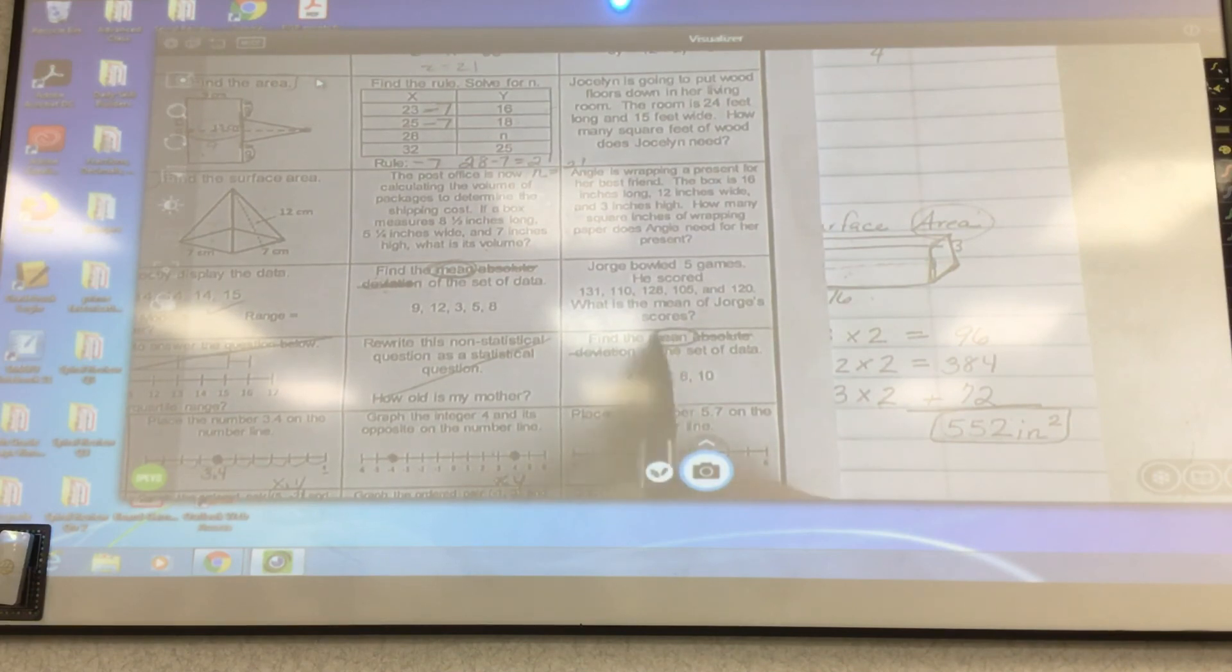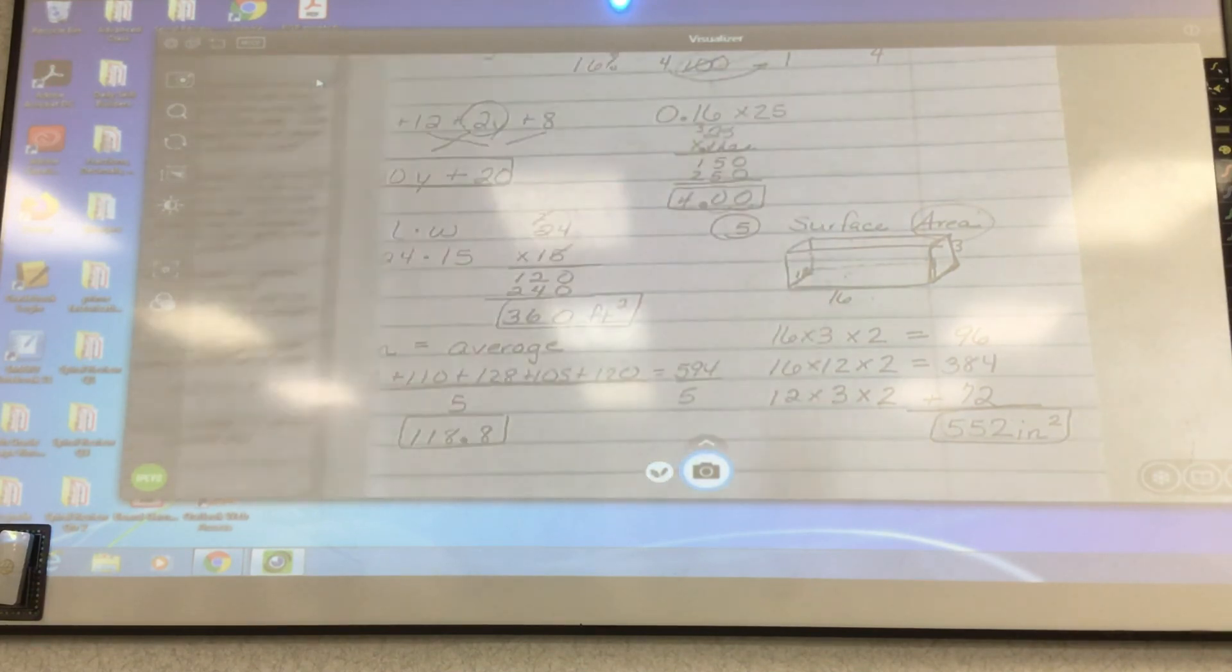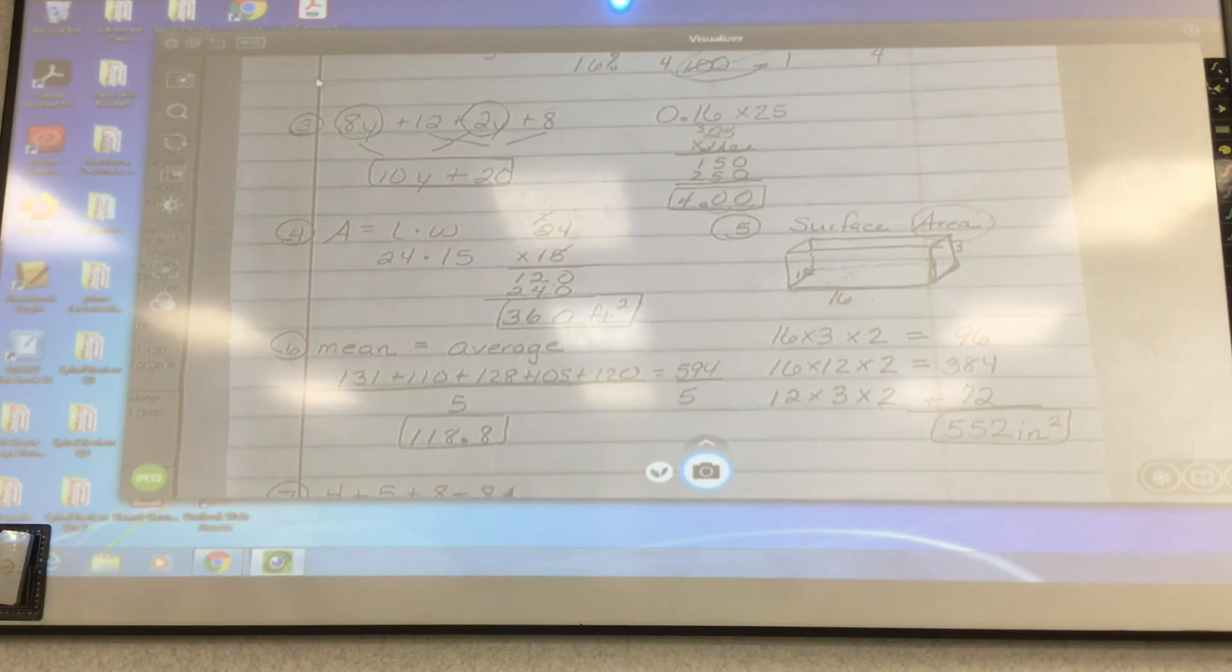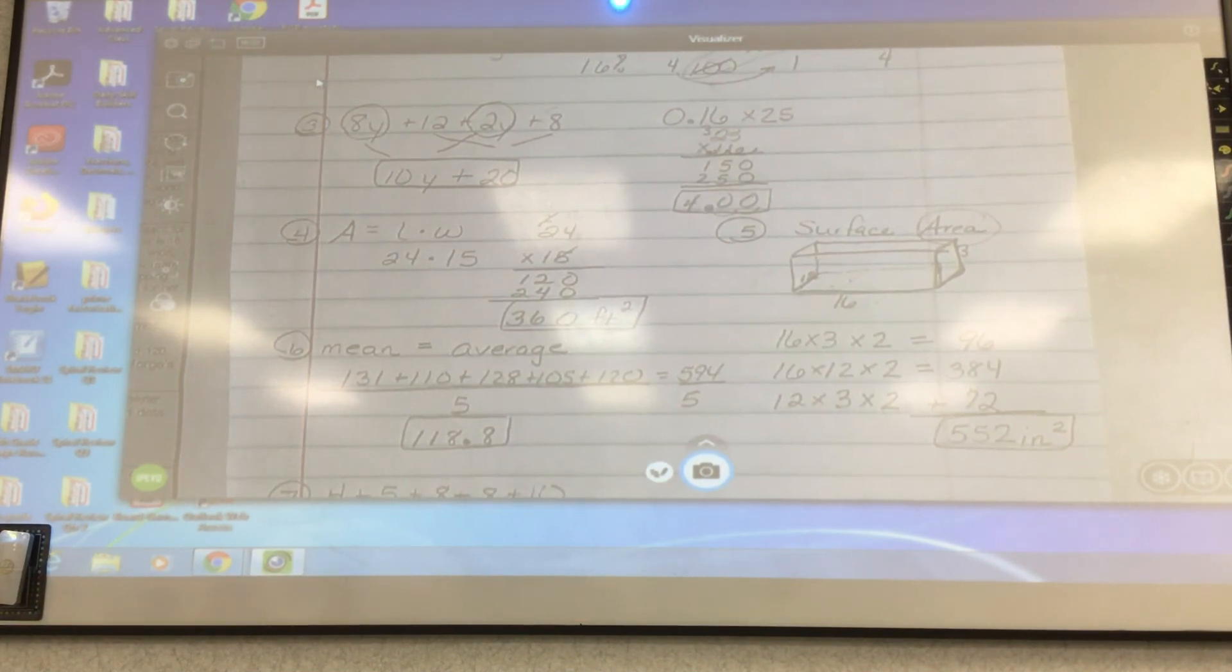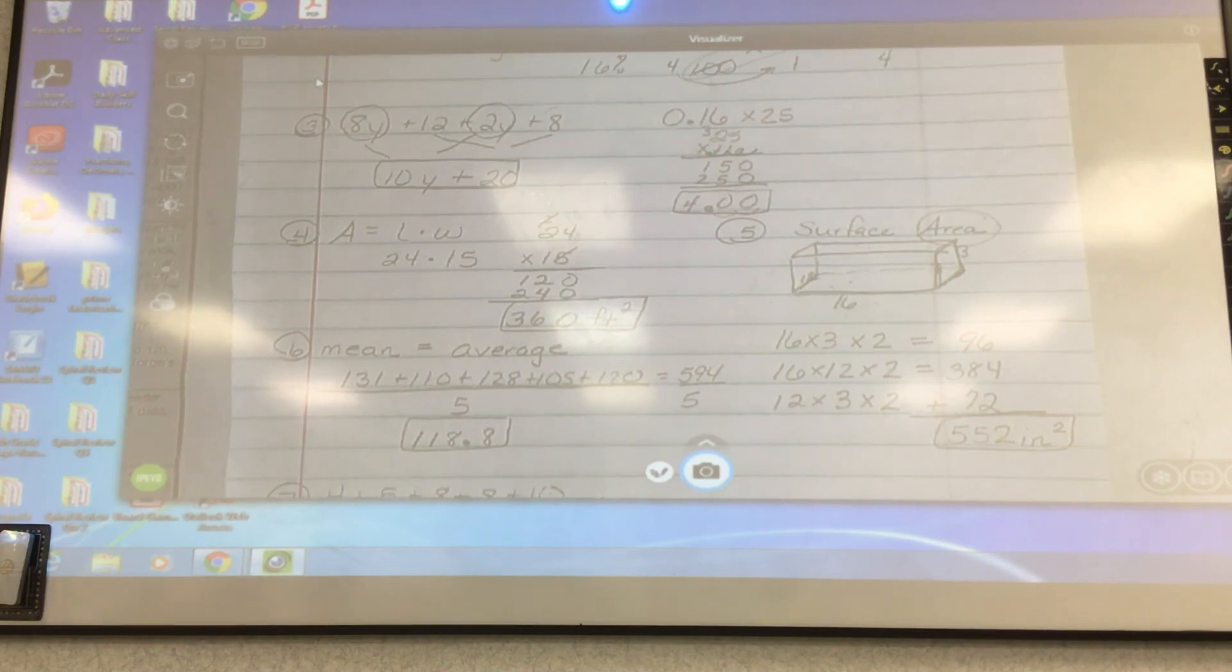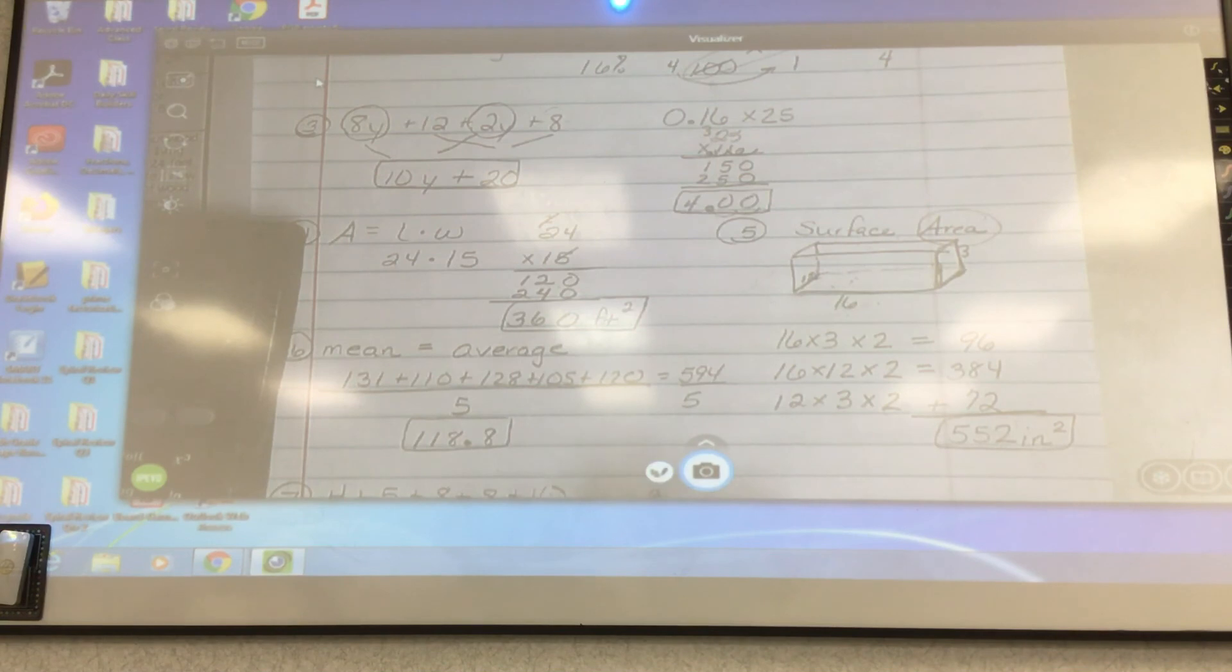Number seven says find the mean absolute value or absolute deviation. I want you to cross off absolute deviation. So I just want you to find the mean. So we are going to do 4 plus 5 plus 8 plus 8 plus 10. We're going to divide that by 1, 2, 3, 4, 5. We'll divide it by 5. These are small numbers so you should be able to add them together. We've got the calculator so let's just use the calculator. 4 plus 5 plus 8 plus 8 plus 10 equals 35. Dividing it by 5 and we get 7 as my final answer.